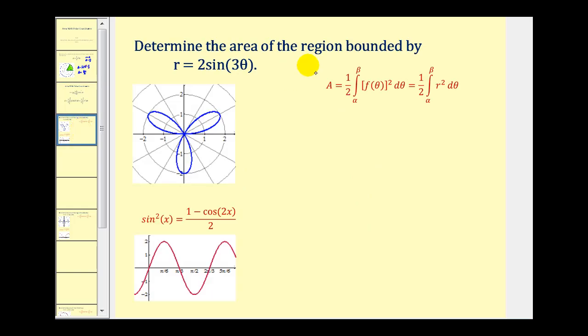Here we want to determine the area of the region bounded by r equals two sine three theta. Here's the graph of that polar equation. It's also going to help us to determine alpha and beta, or our limits of integration, if we graph r equals two sine three theta on the coordinate plane, where the y-axis would be r, and the x-axis would be theta. So this would have amplitude two, and the period would be two pi divided by three, or two-thirds pi, as we see here. So I think what we'll do here is set up the definite integral that would find the area of one petal, and then we'll multiply this by three.